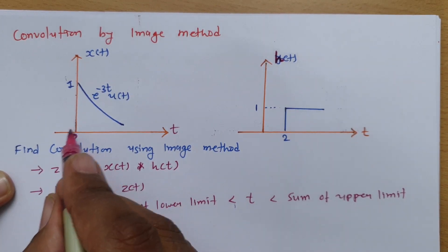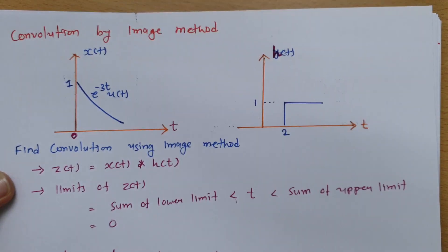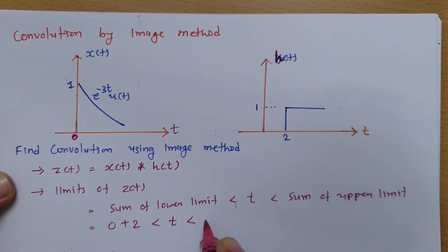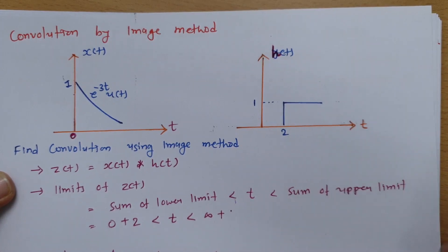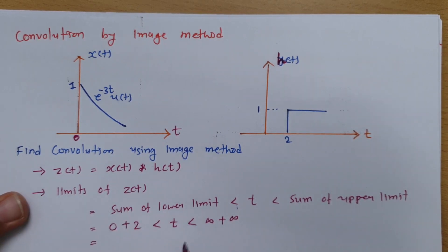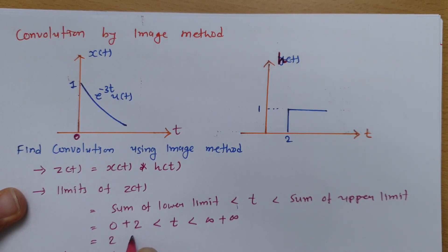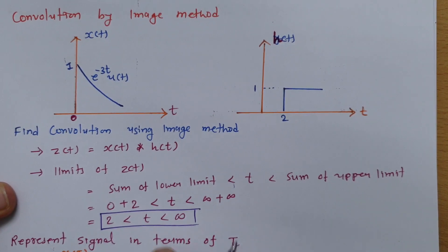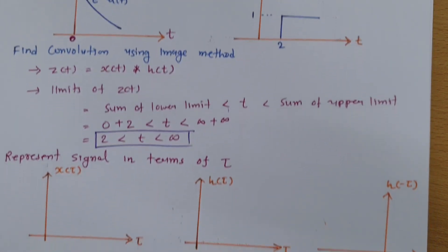If you calculate the sum of lower limits: for x(t) it is 0 and for h(t) it is 2, so 0 plus 2 gives us 2. For the upper limits, both signals go to infinity, so infinity plus infinity. Therefore, the limit of z(t) is from 2 to infinity. Whatever signal we are plotting as the convolution result, the resultant limit varies from 2 to infinity.